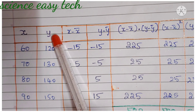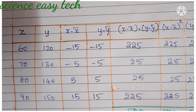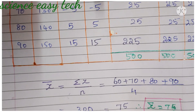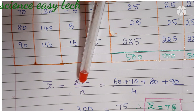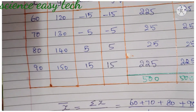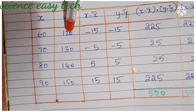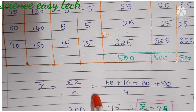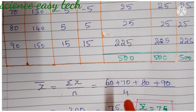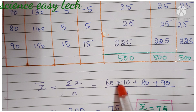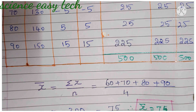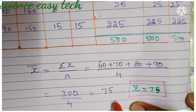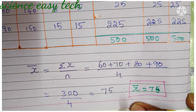First, we have to find x̄ and then ȳ. The formula is x̄ = Σx ÷ n. How many n values? They have given 4 values: 1, 2, 3, 4 — and in y also n = 4. So x̄ = (60 + 70 + 80 + 90) ÷ 4 = 300 ÷ 4 = 75. Therefore, x̄ = 75.